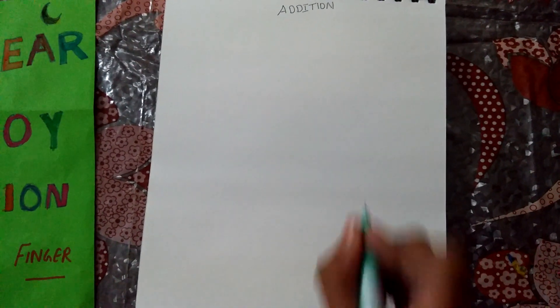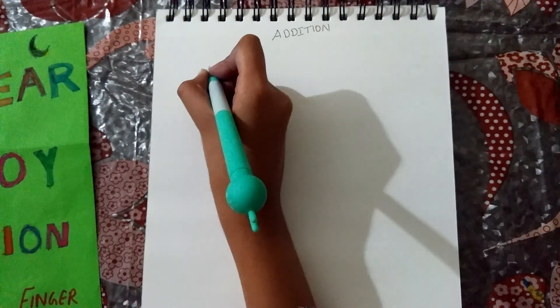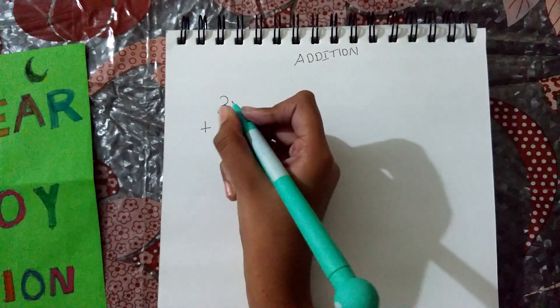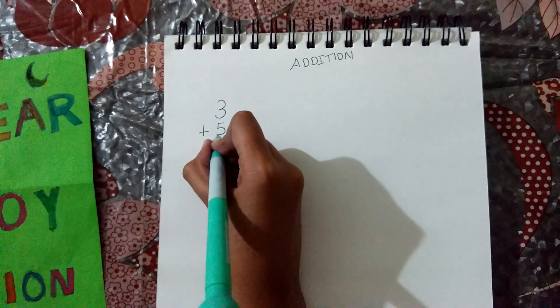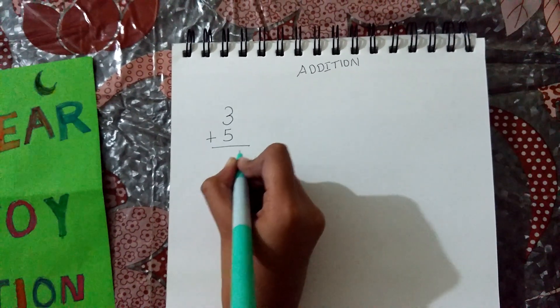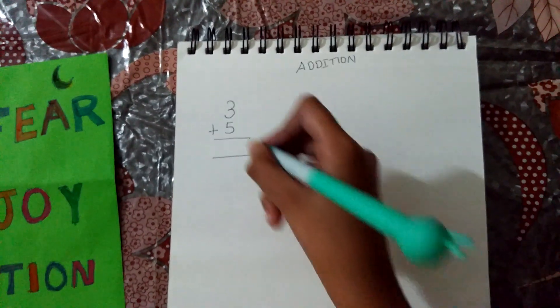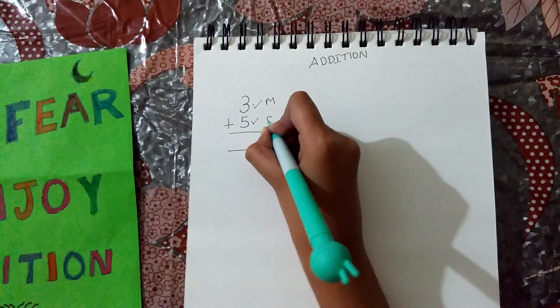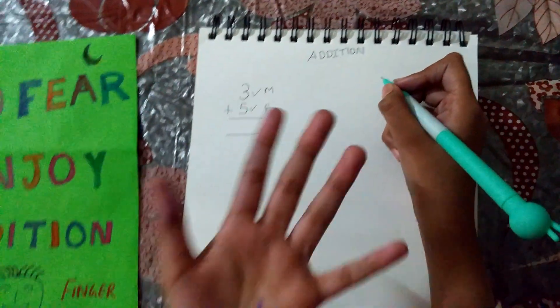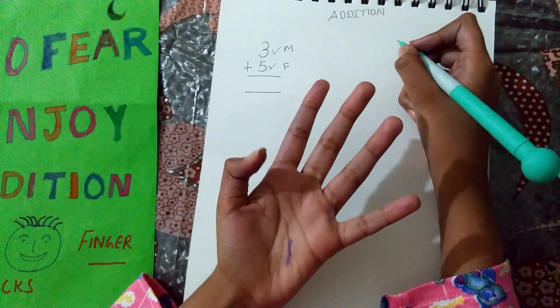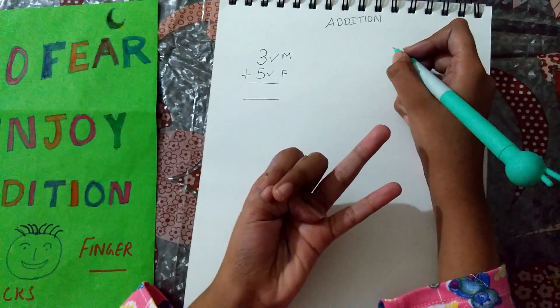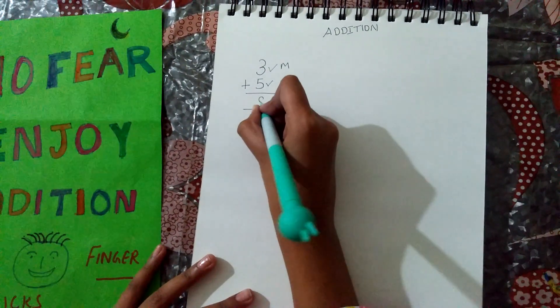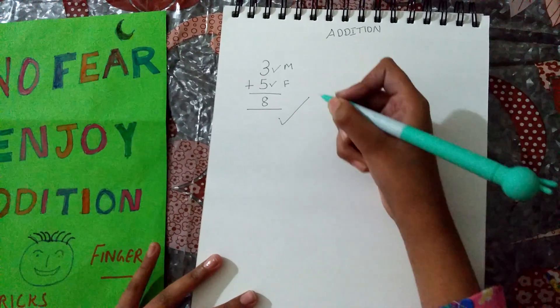The first number is 3 plus 5. You have to take 3 in mind and 5 in finger. So take 5 in fingers. After 3, 4, 5, 6, 7, 8. So the answer is 8. That is the correct answer.